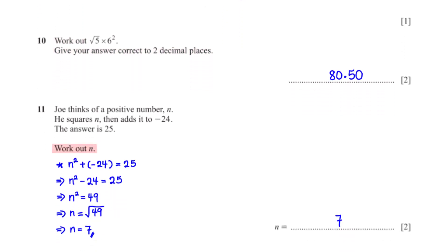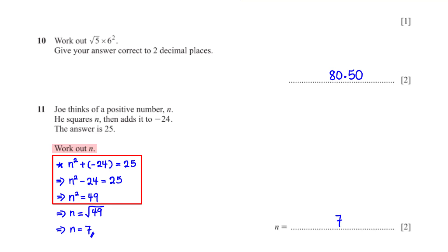Work out n. We are told n is a positive number. Add it to negative 24 and the result is 25. This means n² + (−24) = 25, which is n² − 24 = 25. Adding 24 to both sides gives n² = 49. Taking the positive square root, n = 7.